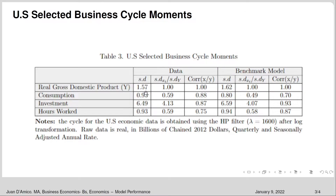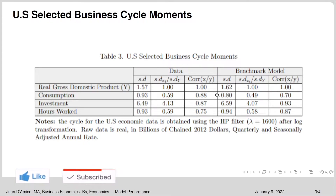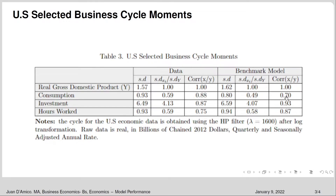For real GDP we can see that the standard deviation is pretty close between the model and the data. Consumption is somewhat close, but the standard deviation in the real data is higher than in the model, meaning the volatility is a bit higher in the real data than what the model produces. Looking at investments and hours worked, the values are pretty close. The biggest discrepancy in both standard deviations and correlations comes from consumption, where the model and the data diverge the most.